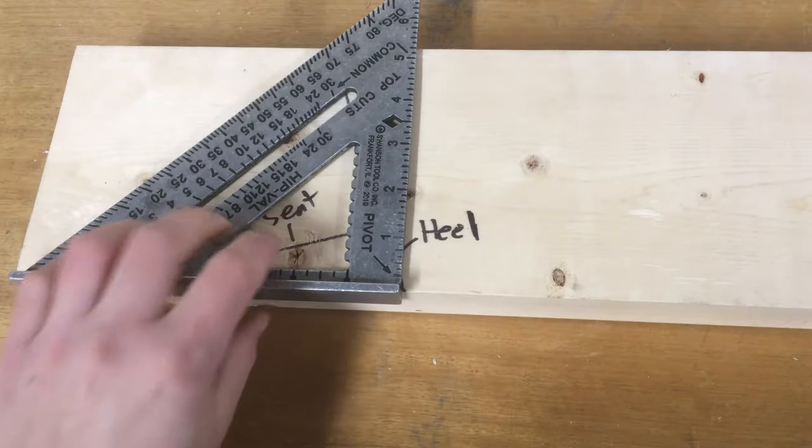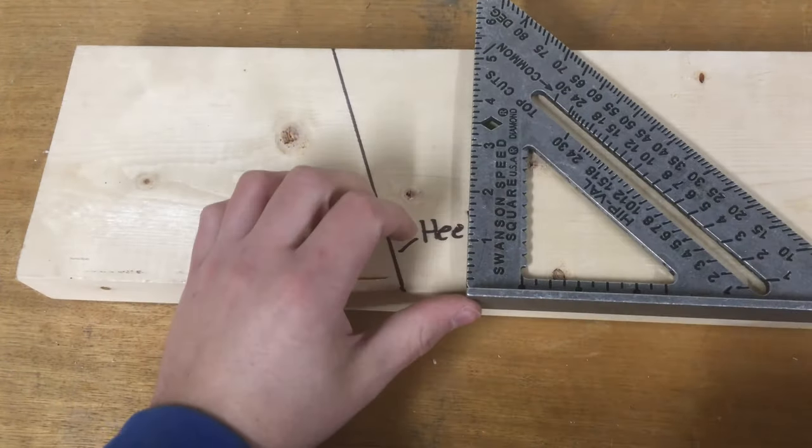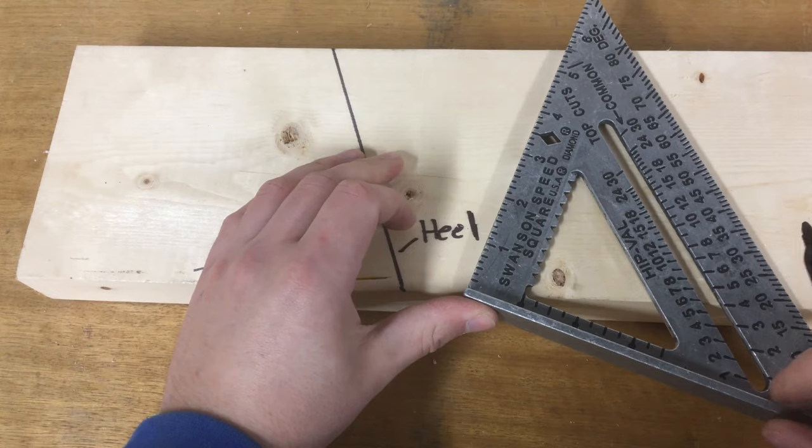The speed square is of course reversible, so if you need to go the other way, you can flip it around and mark your angles this way too.